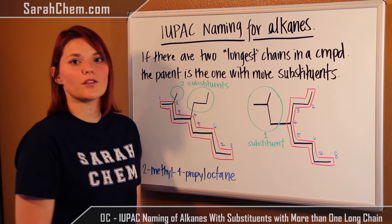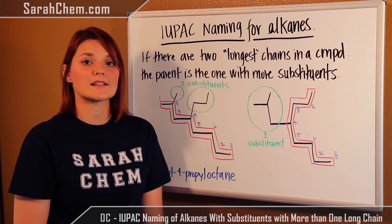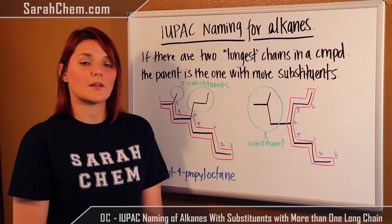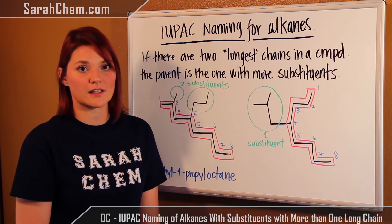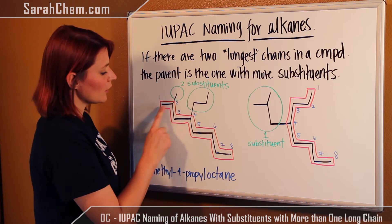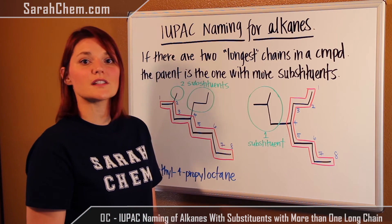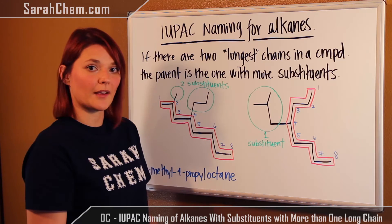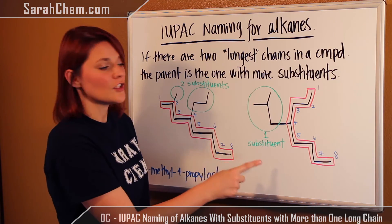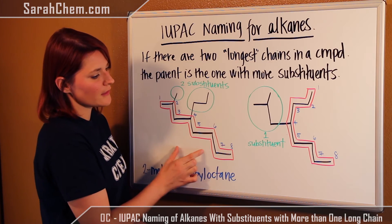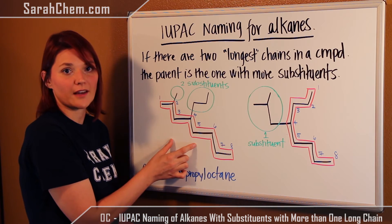So both of these are the so-called longest chain in the compound, but both aren't what you're going to consider the parent chain. The parent chain is the one that has the most branches coming off of it. In this case I would have two different substituents coming off, whereas in this case I would only have one. So because this has two substituents and this has one, this here has to be my parent chain.